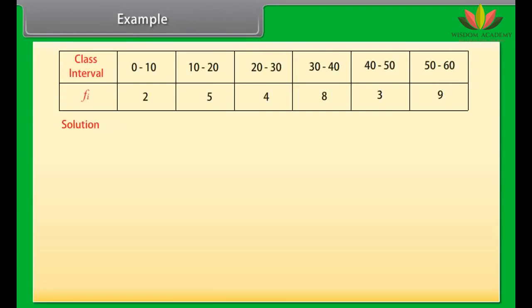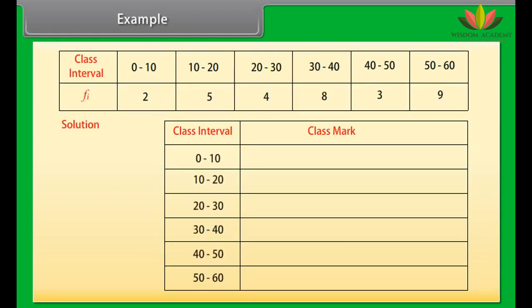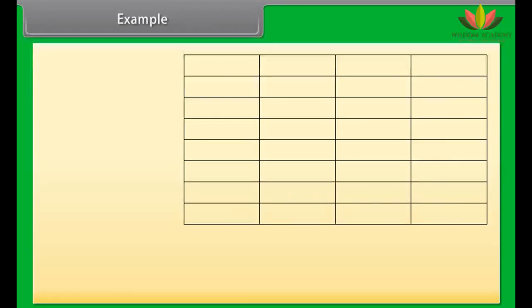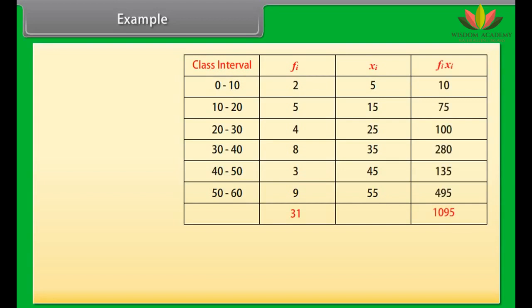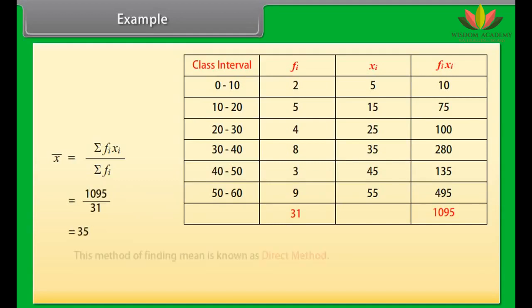Find the mean of the given data. Solution: First we find the class mark of each class interval using the formula: class mark equals (upper class limit plus lower class limit) divided by 2. In the first column we have the class intervals, and in the second column the frequencies. The sum of the frequencies is 31. We then find the class marks xi, compute the products fi·xi, and find the mean: x-bar equals summation of fi·xi divided by summation of fi, which equals 1095 divided by 31, which equals 35.